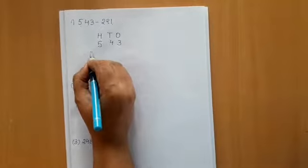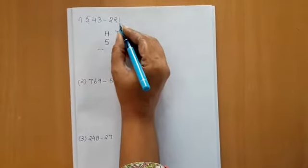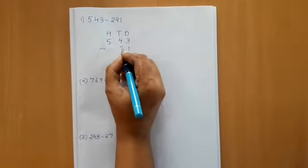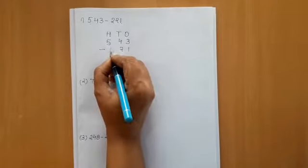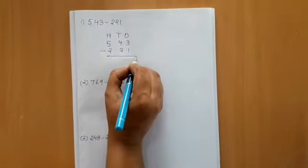And we will put the sign of minus. Now, 221, how will you write? 1's place, 1. Tens place, 2. And hundreds place, 2. And we will subtract.